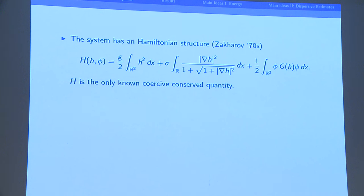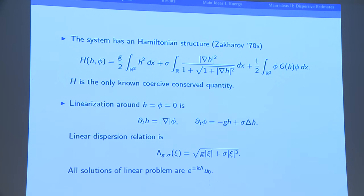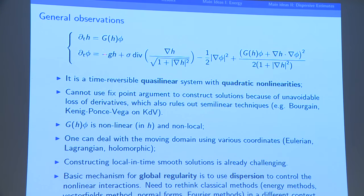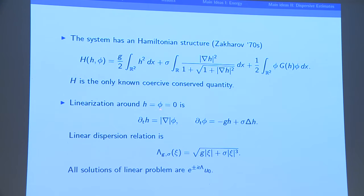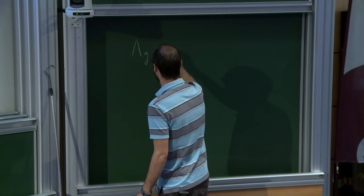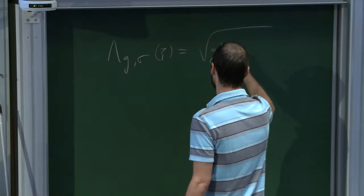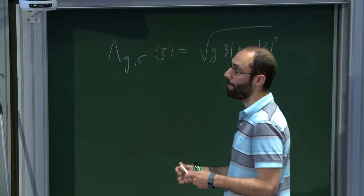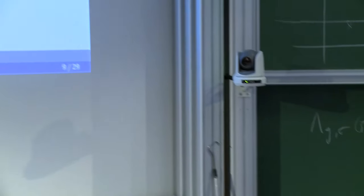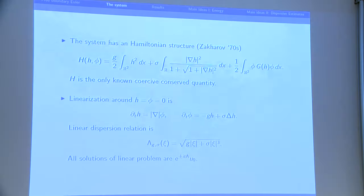The Hamiltonian H is the only known coercive conserved quantity, so you don't get much control from conservation alone. For global regularity, I want to stay close to a flat interface. If you linearize around 0, the Dirichlet-to-Neumann operator for the half-space is just |grad|. You get minus gh minus sigma*Laplacian(h) for the linearization near the flat solution. The linear dispersion relation is lambda_{g,sigma} = sqrt(g*xi + sigma*|xi|^3).